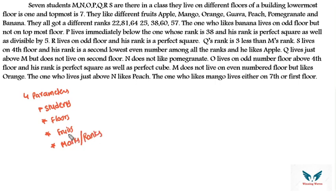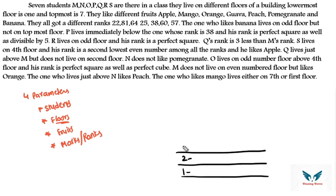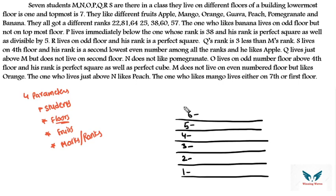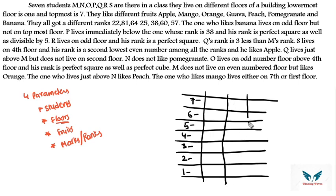These are the four different parameters we have. Let's draw a table. We can take the fixed parameter as floors, so let's draw seven floors from bottom to top: one, two, three, four, five, six, seven. In the columns: first column is floors, second column is students, third parameter is fruits, and fourth parameter is ranks.